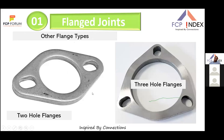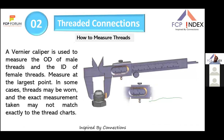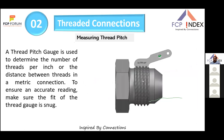Other flange types include two-hole flanges, three-hole flanges, and proprietary flanges such as Komatsu and BCK. Moving on to thread connections — a vernier caliper is used to measure the OD of male threads and the ID of female threads at the largest point. In some cases, if thread wear has occurred, the exact measurement may not perfectly match standard thread charts.